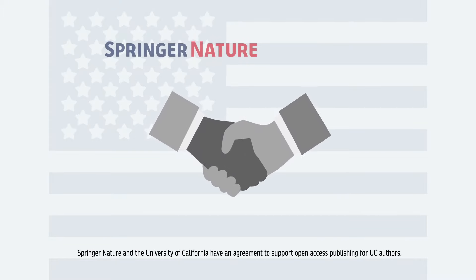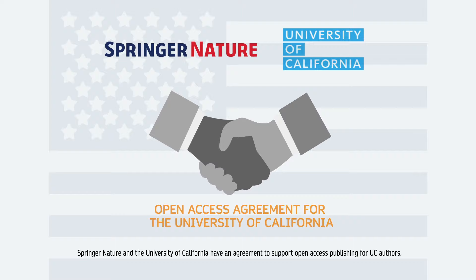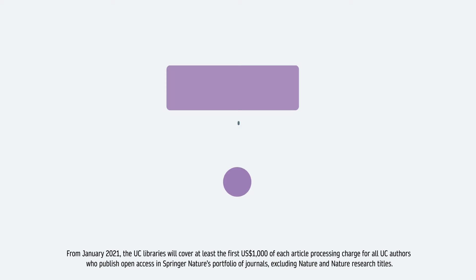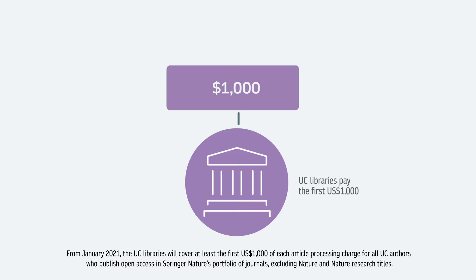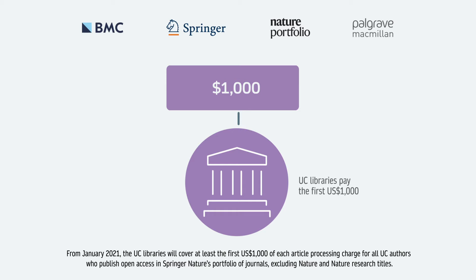Springer Nature and the University of California have an agreement to support open access publishing for UC authors. From January 2021, the UC Libraries will cover at least the first $1,000 of each article processing charge for all UC authors who publish open access in Springer Nature's portfolio of journals, excluding Nature and Nature research titles.